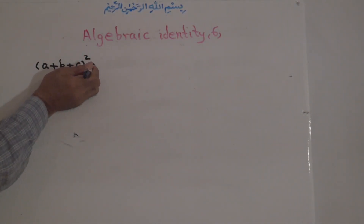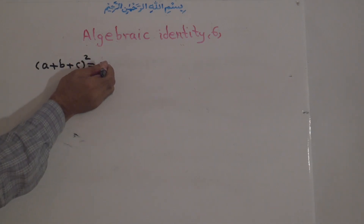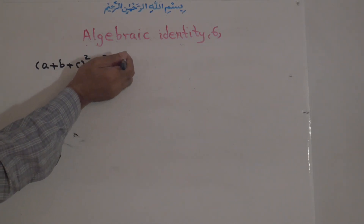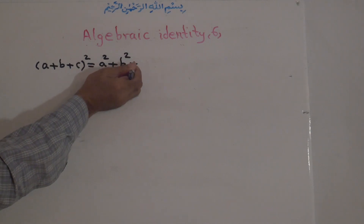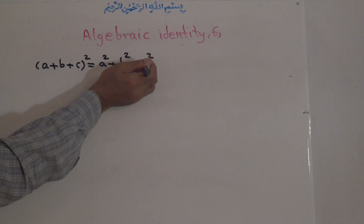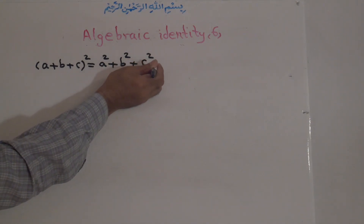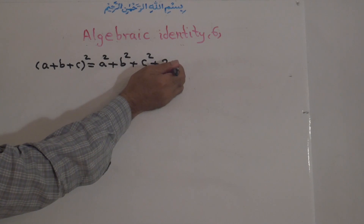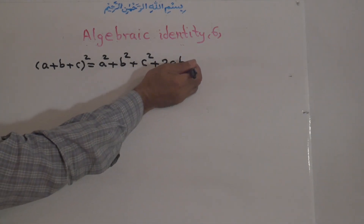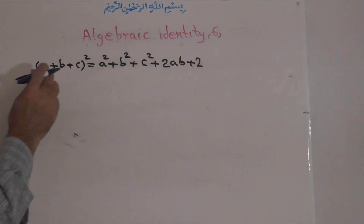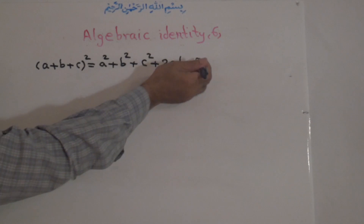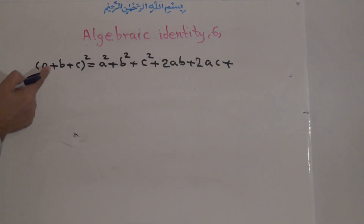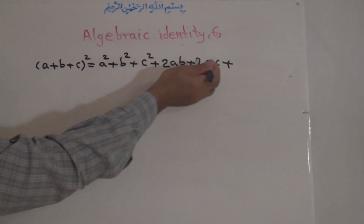It means that it is the first term A to the power of 2, plus B to the power of 2, plus C to the power of 2, plus 2 times the 1st term times 2nd term AB, plus 2 times 1st term times 3rd term AC, and plus 2 times 2nd term times 3rd term 2BC.